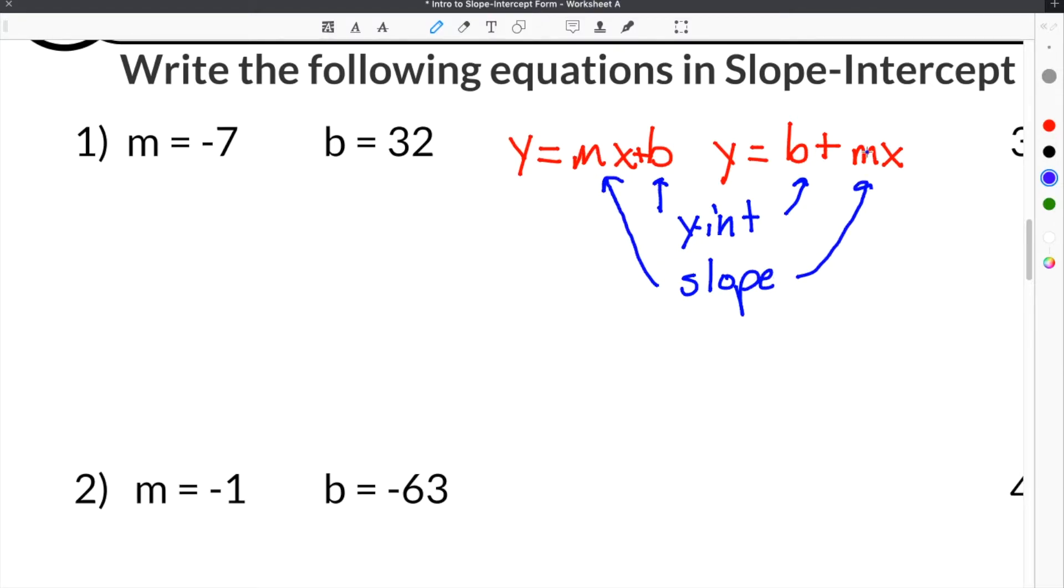So it doesn't matter how you write it, you will still use B for Y-intercept and M for slope. If we look, we are already given our slope because we know M is slope, and we're already given our Y-intercept because we know that B is Y-intercept. So in order to write our equation out, all we have to do is take our slope, which in this case is negative 7, and plug it in for M.